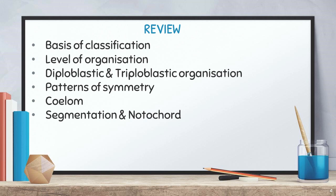In the last class we discussed the basis of classification — how organisms are classified based on certain characters. We learned about the level of organization: cellular level, tissue level, organ level, and organ system level of organization.